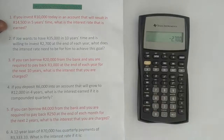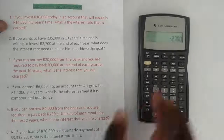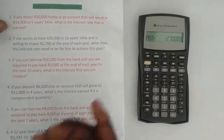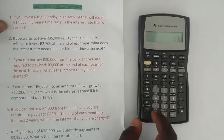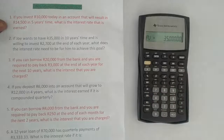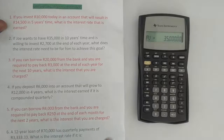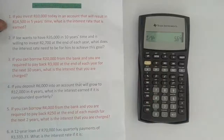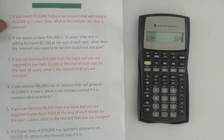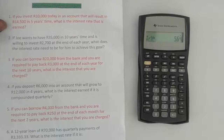Enter 2,700 as a negative because you'll be paying this money out to invest it, then press PMT. Then enter 35,000 as the future value — leave it positive because that's the money he expects to receive — and press FV. Now press CPT then I/Y to compute. The result is 5.64%. So if Joe wants to have 35,000 rand in 10 years time by investing 2,700 rand at the end of each year, the interest rate he needs to earn is 5.64%.